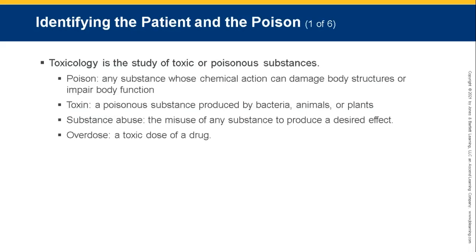Toxicology is the study of toxic or poisonous substances. Key terms: Poison — any substance whose chemical action can damage body structures or impair body function. Toxin — a poisonous substance produced by bacteria, animals, or plants that is harmful to the body and impairs systemic functions. Substance abuse — the misuse of any substance to produce a desired effect; any substance can be abused, not necessarily specific to drugs. Overdose — a toxic dose of a drug.